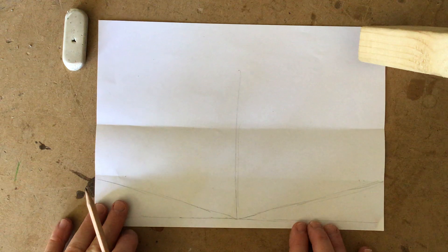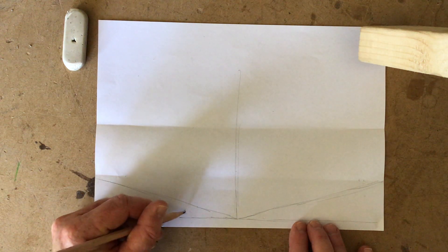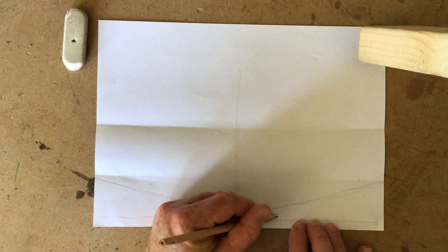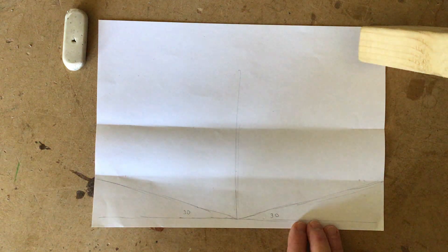So there's my 30 degrees. Now we're ready to start our isometric drawings.